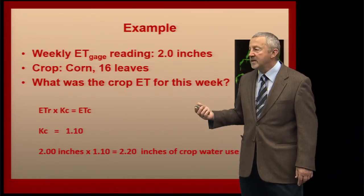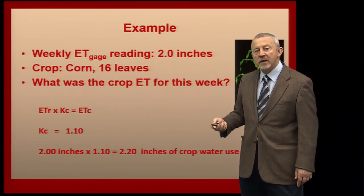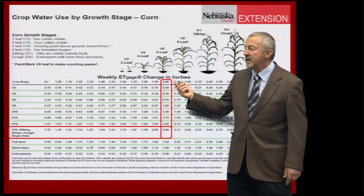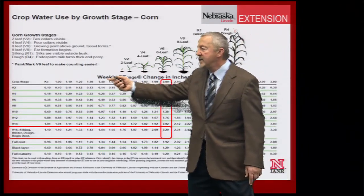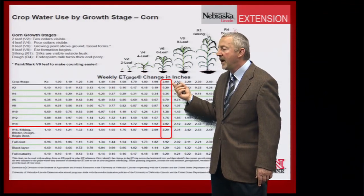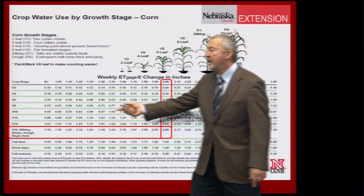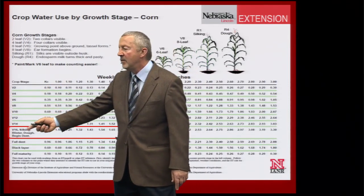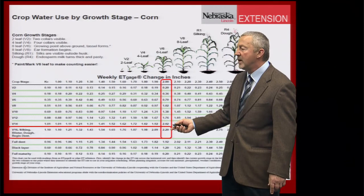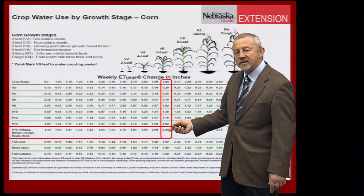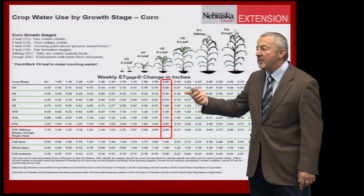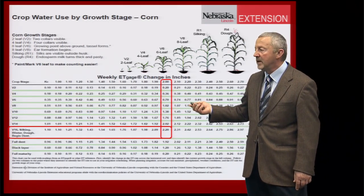This 2.2 inches might be an indication of how much water the irrigation system should replace, though depending on where we are in the growing season, you might apply more or less than that amount. The NEB guide also includes a pre-calculated table with weekly ET across the top and stage of growth on the left-hand side, so you can simply find your V16 stage and intersect with your 2 inches of water use to get the same result — 2.2 inches — without doing the multiplication yourself. Similar tables exist for soybeans and wheat.